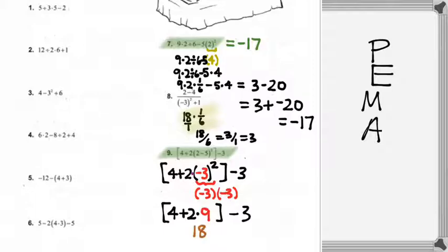2 times 9 is going to give me 18. 4 plus 18 is going to give me 22. The brackets, the parentheses, will no longer be necessary. And I'll end up with 19.